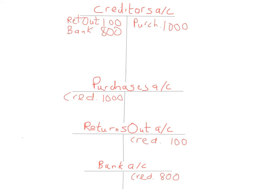With the purchases ledger control account, the balances of all creditors — everyone we owe money to — are collected from the purchases ledger, which contains all the supplier T-accounts. The remaining information comes from the day books: the purchases day book, returns outwards day book, and the bank and cash columns of the cash book. Once all this information is gathered from two sources — the day books and the purchases ledger T-accounts — if the balances carried down and brought down at the end and beginning of the month match, the control account proves there are no errors in double entry and no theft.